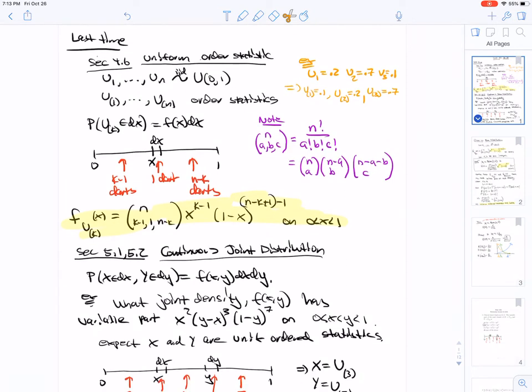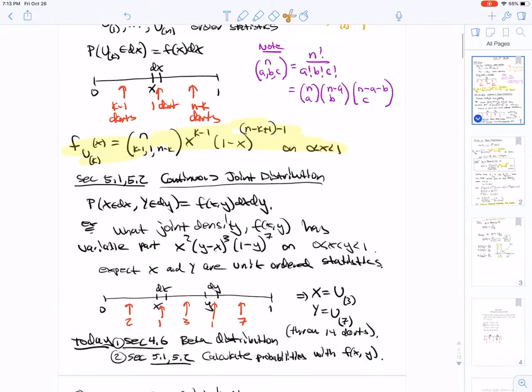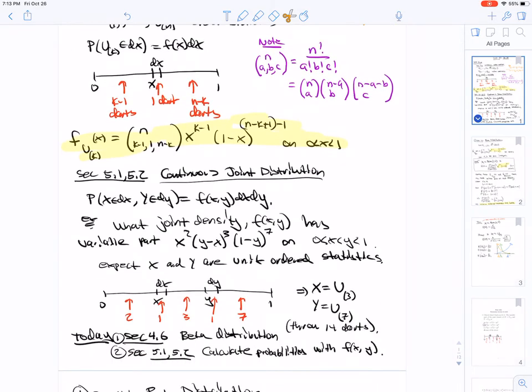We were able to derive the formula for the density of the kth order statistic as shown. We then talked about the continuous joint distribution section 5.1 and 5.2, and the order statistics form a rich family of joint distributions on the interval 0,1 cross 0,1.